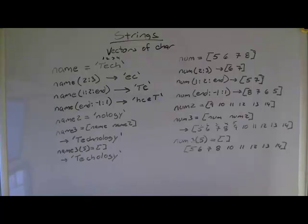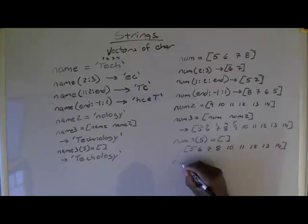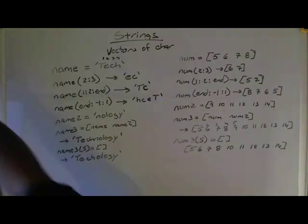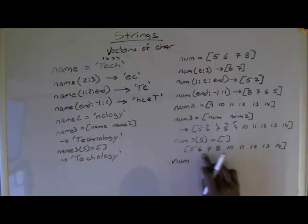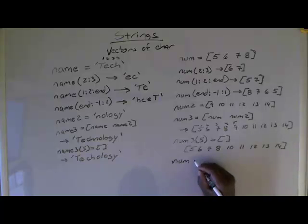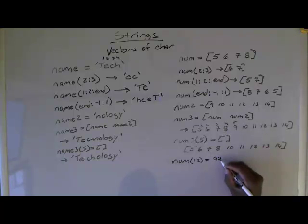Let's look at one more case. We're going to do num—let's say there are 1, 2, 3, 4, 5, 6, 7, 8, 9 elements here. Let's say if we said num(12) equals the number 99.